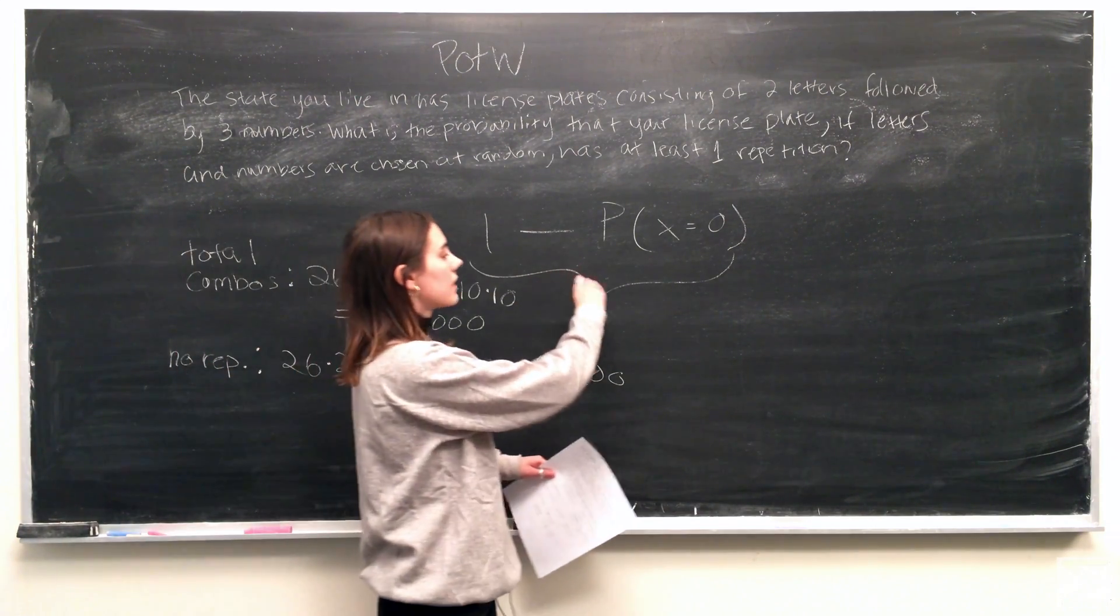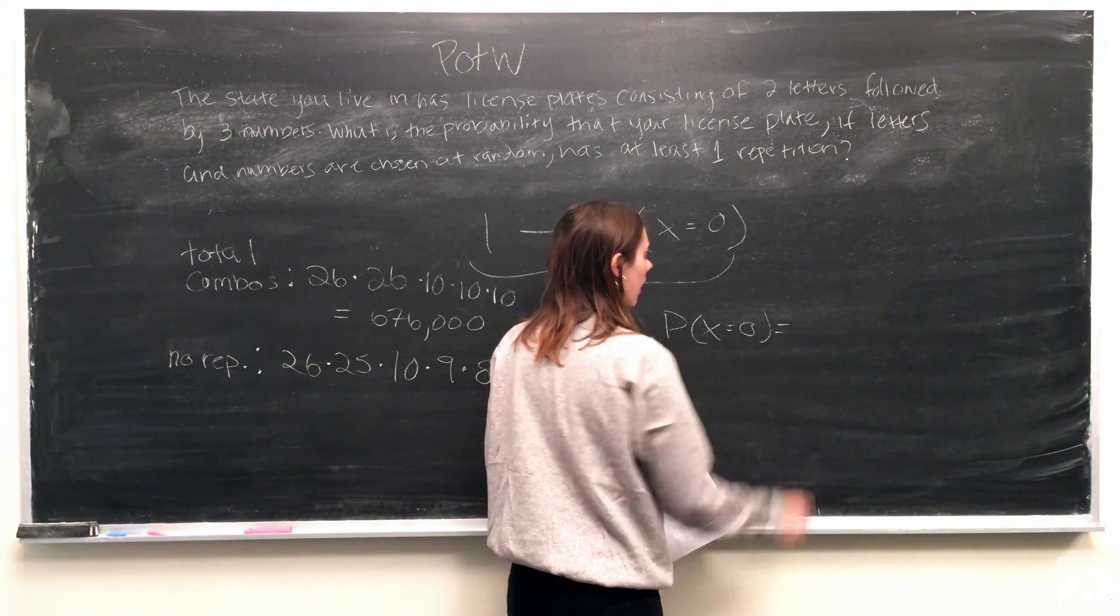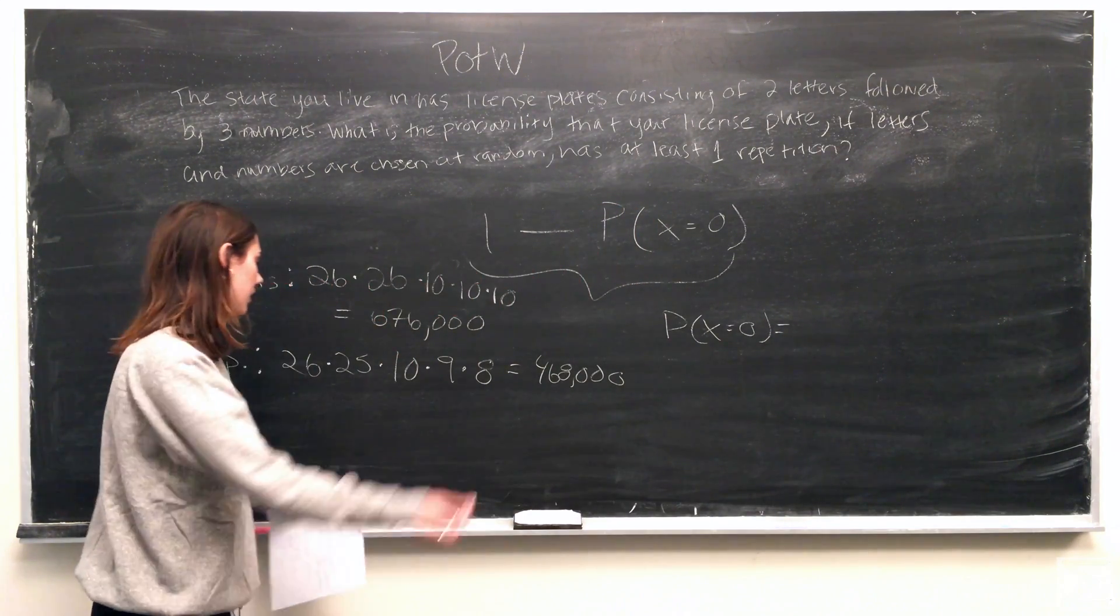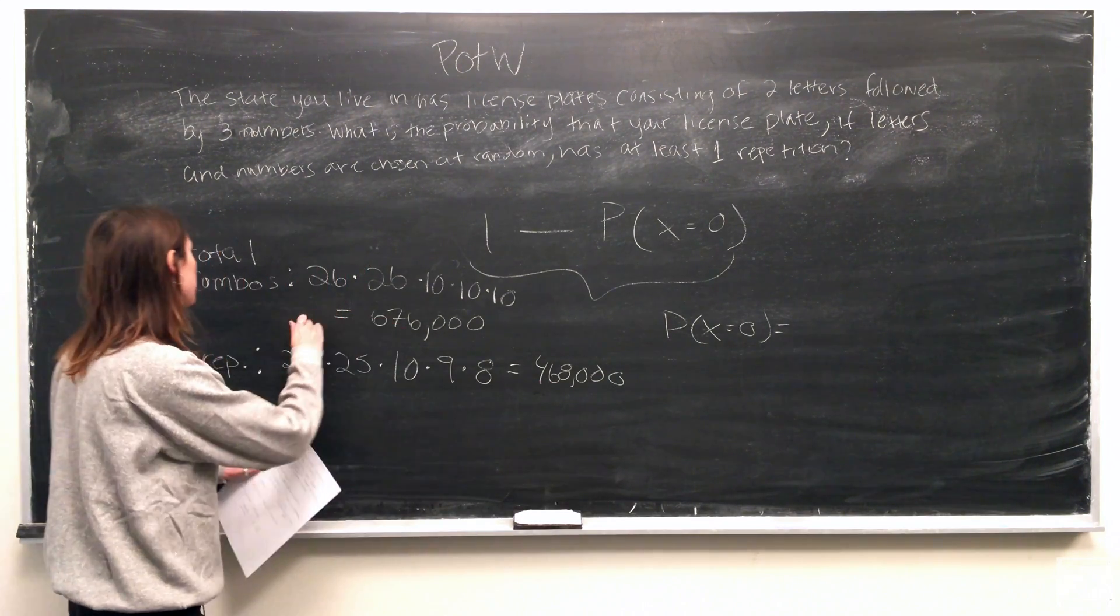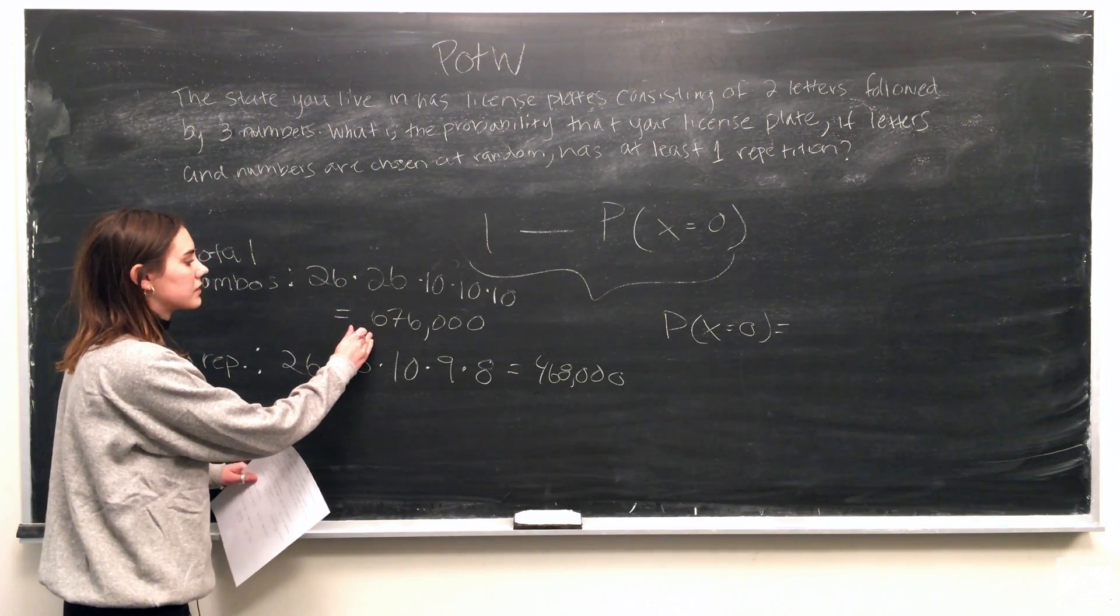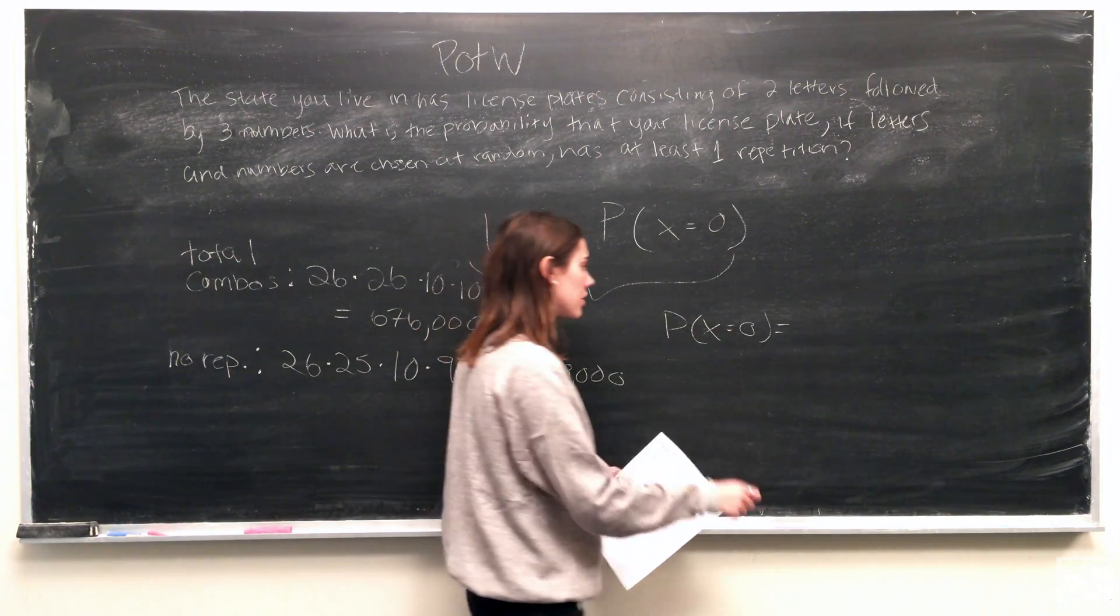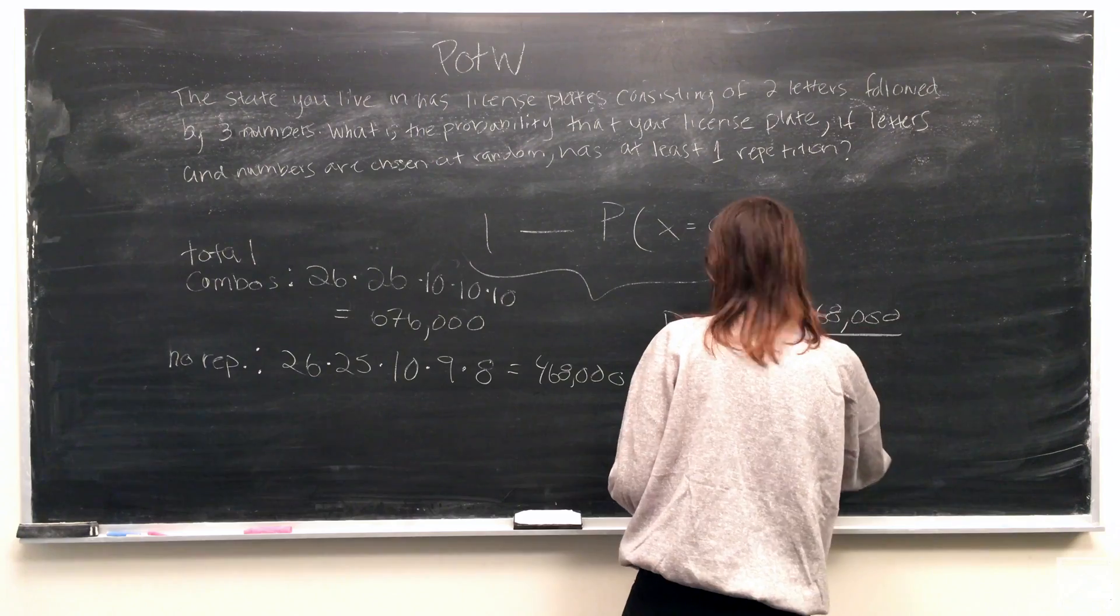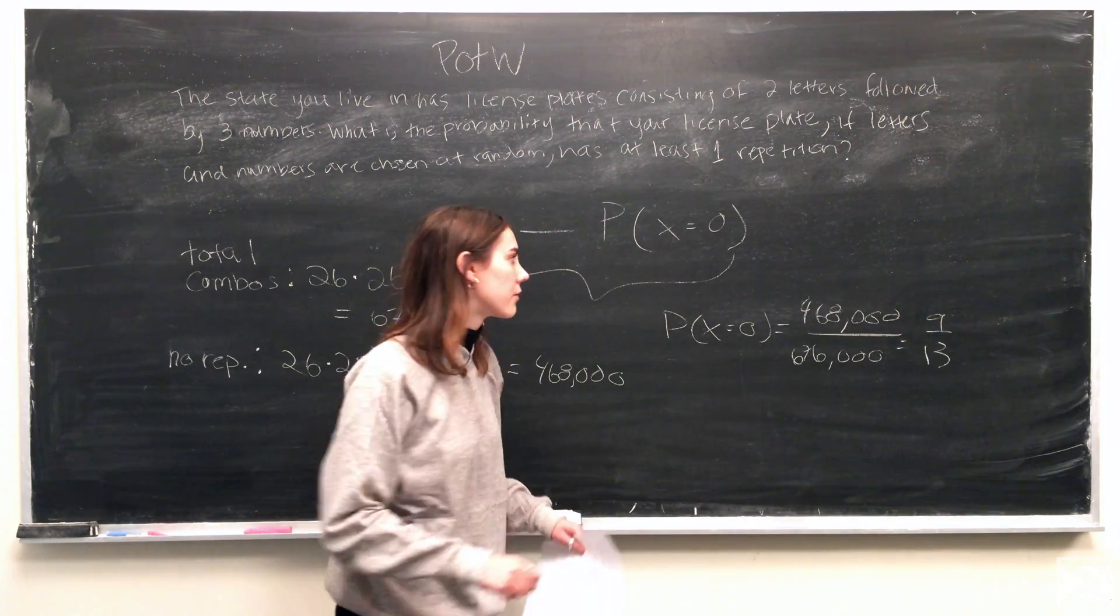So to find the probability of having no repetitions, what we can do is take this 468,000 and divide it by the total number of combinations, 676,000 to find the probability of having no repetitions. What we actually come up with is 9 over 13.